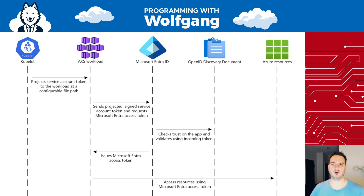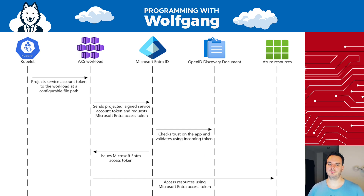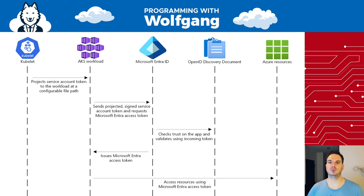Here we have a simplified workflow of the entire process we just did. Everything starts with the kubelet. The kubelet projects a service account token to our application — to be more precise, to our pod. And then if the pod wants to access any resources, in our example the Key Vault, the pod sends the account token to Microsoft Entra. Microsoft Entra uses the OIDC discovery document to check if this token is valid and if Entra trusts this identity. And if this is successful, then Entra issues a token and sends it back to the pod. And then every time our application wants to access any Azure resources, like the Azure Key Vault, it sends this token and gets access to the Key Vault.